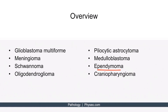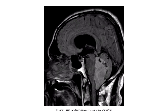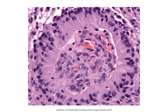The next topic is ependymoma. This is a malignant tumor of ependymal cells commonly seen in children. The tumor is most commonly found in the fourth ventricle, and when obstructed, it can cause hydrocephalus — a buildup of cerebrospinal fluid within the brain. On biopsy, perivascular pseudorosettes can be observed. Here's an MRI showing the mass located in the fourth ventricle — this patient may present with hydrocephalus since the mass is blocking the fourth ventricle and obstructing CSF flow. A histological image shows perivascular pseudorosettes, with blood vessels surrounded by tumor cells.